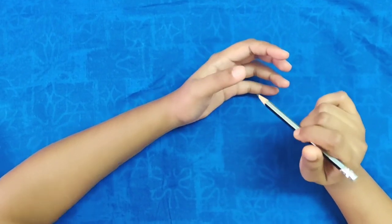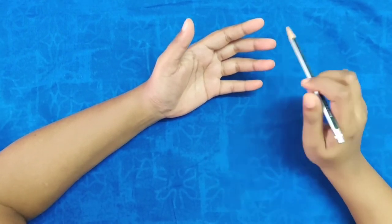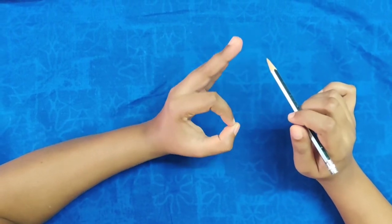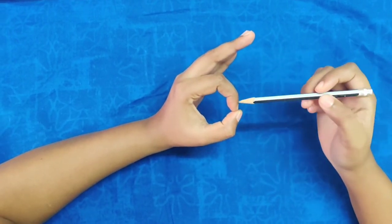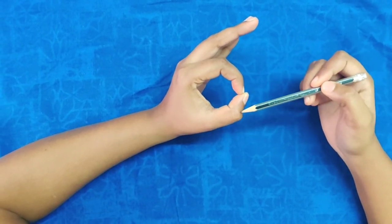In a patient with anterior interosseous nerve injury, when we ask the patient to make an OK sign, the patient will not be able to do it properly because of weakness of the flexor digitorum profundus of the index finger and FPL of the thumb.